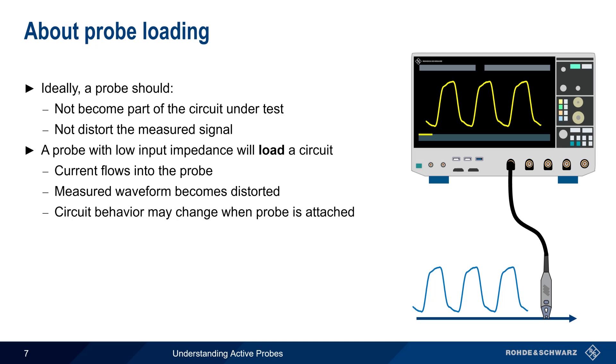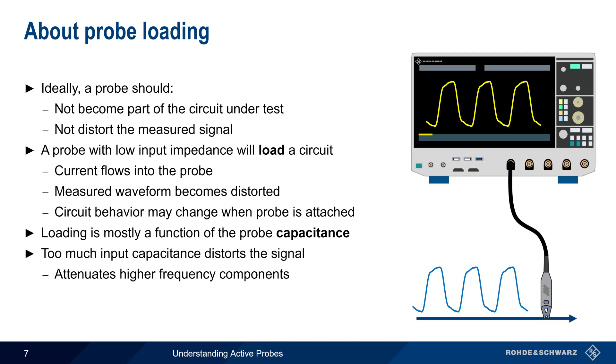Loading due to oscilloscope probes is primarily due to the probe's capacitance. If the probe has an excessive amount of input capacitance, this will distort the signal. Higher frequency components become attenuated, and this attenuation will affect the amplitude and the shape of the measured waveform.